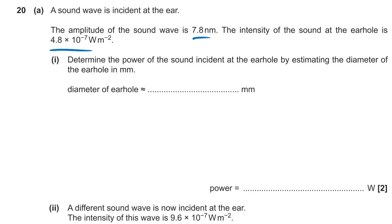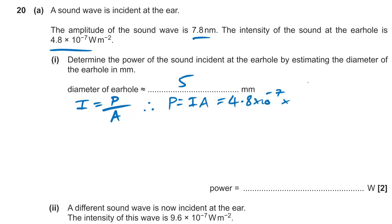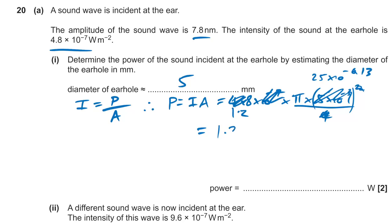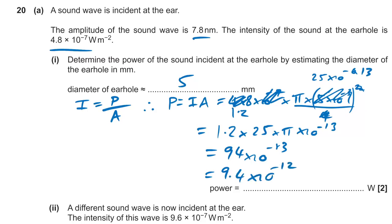Question twenty: sound wave with amplitude 7.8 nm and intensity 4.8 × 10⁻⁷ W/m². Estimating the ear hole diameter as 5 mm, power = intensity × area = 4.8 × 10⁻⁷ × (π × (5 × 10⁻³)² / 4). Computing: 4.8/4 = 1.2, 5² × 10⁻⁶ = 25 × 10⁻⁶, combined power ≈ 9.4 × 10⁻¹² W.